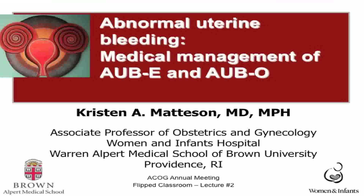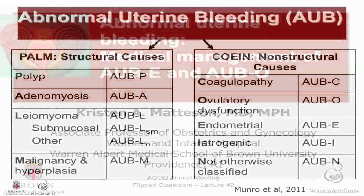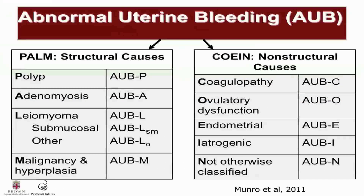This is the second of three mini lectures for the flipped classroom session on abnormal uterine bleeding. This is a repeat slide from my first mini lecture on the terminologies and etiologies for abnormal uterine bleeding. I put this slide up as a reminder that abnormal uterine bleeding is a symptom, not a diagnosis, and it's caused by one of these etiologies — either structural causes or non-structural causes.